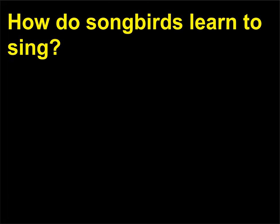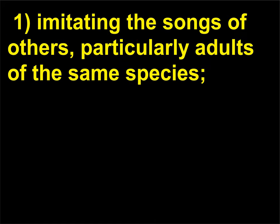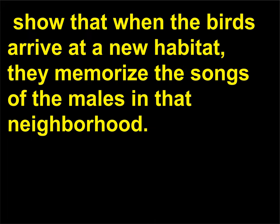How do songbirds learn to sing? Through analysis of many bird species, ethologists have found two major types of song development: one, imitating the songs of others, particularly adults of the same species, and two, invention or improvisation of unique songs. Observations of male song sparrows, particularly during their first month of life, show that when the birds arrive at a new habitat, they memorize the songs of the males in that neighborhood.